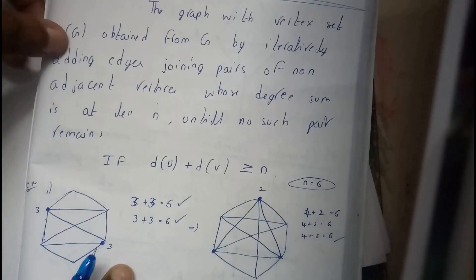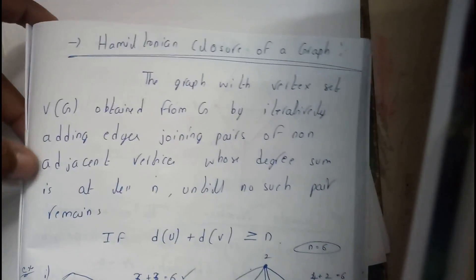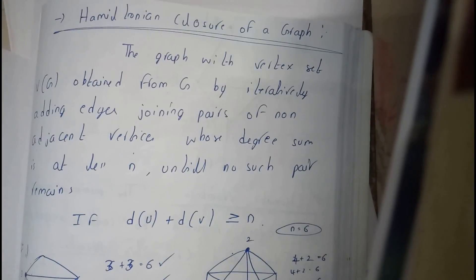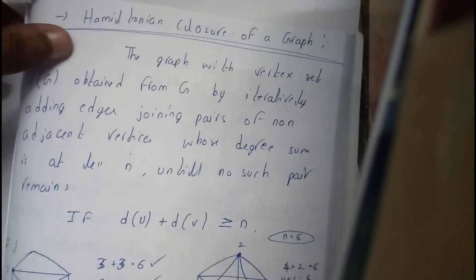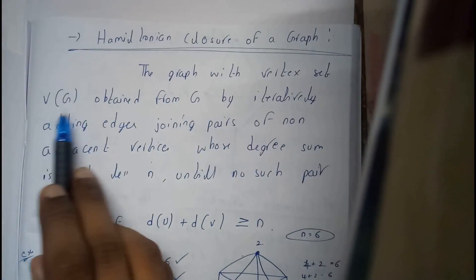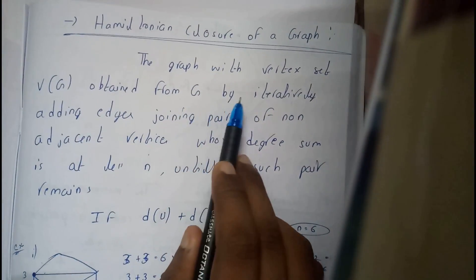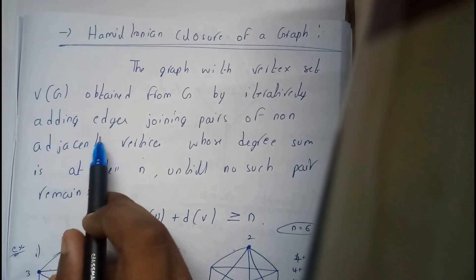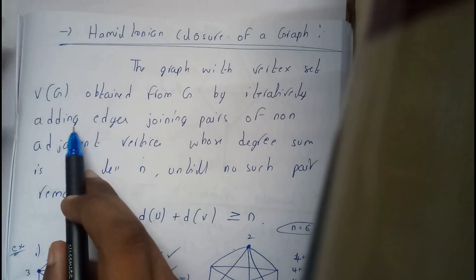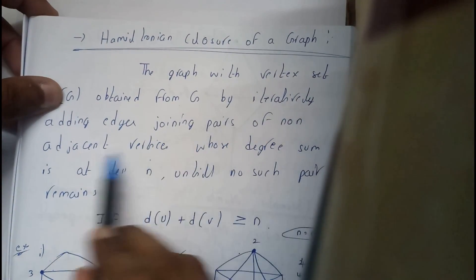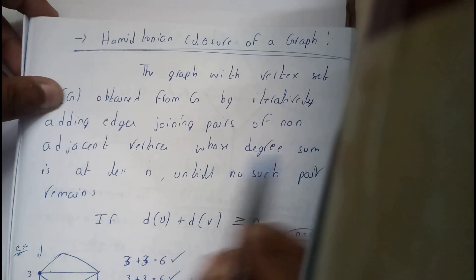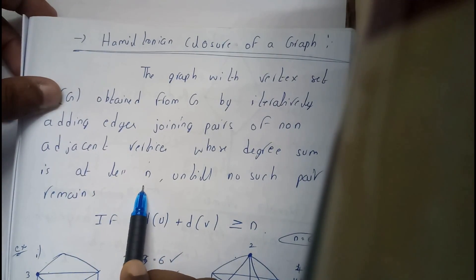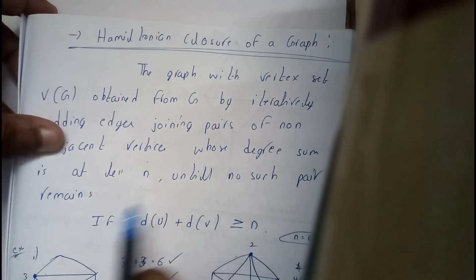Next, when we are going through Hamiltonian closure of a graph. The graph with vertex set V of G obtaining from G by interacting, just go through the definition once. I will be explaining you through the diagram that will be a bit better. Adding the edges joining pair of non-adjacent vertices whose degree sum is less than n until no such pair remains.